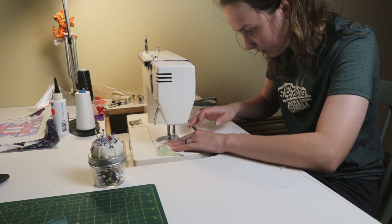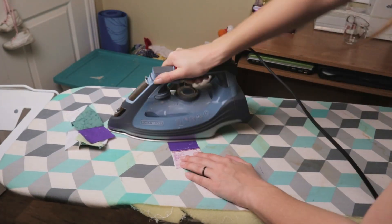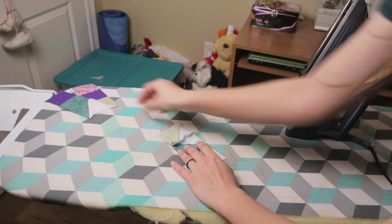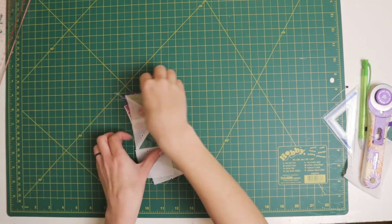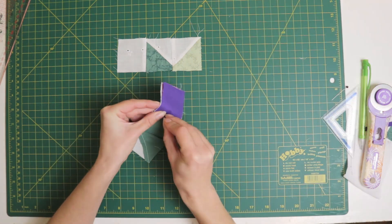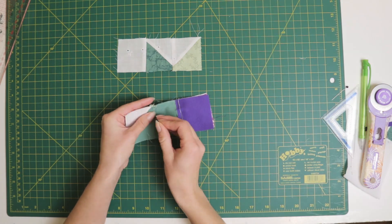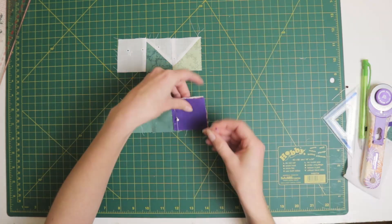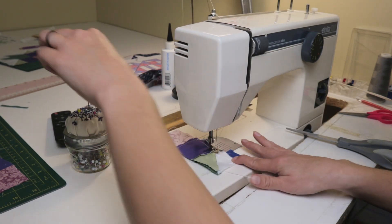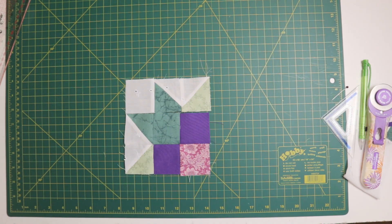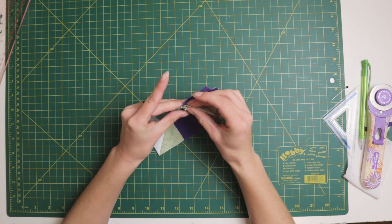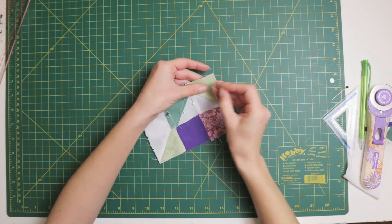Once my rows were all sewn up, I gave them a press. I pressed the seams for the top and bottom rows towards the outside, and the seams for the middle row towards the middle. I do this so that the seams will nest when I sew the rows together. I once again lay out my pieces in the correct order, in order to ensure that they are correctly aligned when I pin the rows together. I start by just pinning the first two rows together, so that I don't get confused as to which seam I should be sewing or get the extra fabric snagged by the machine. Once the first seam is sewn, I pin on the top row, making sure it's in the correct orientation and that the corners all line up before sewing it together.